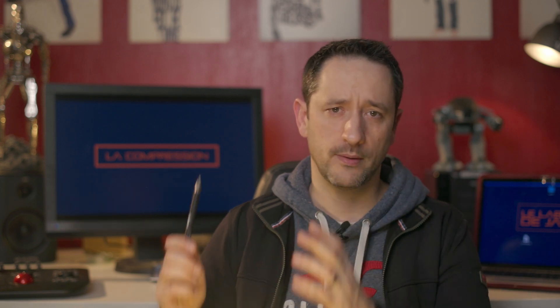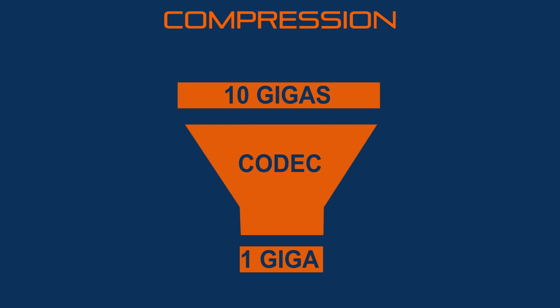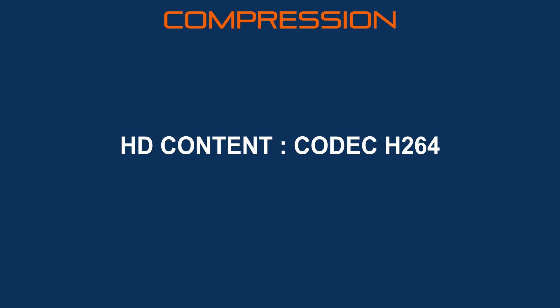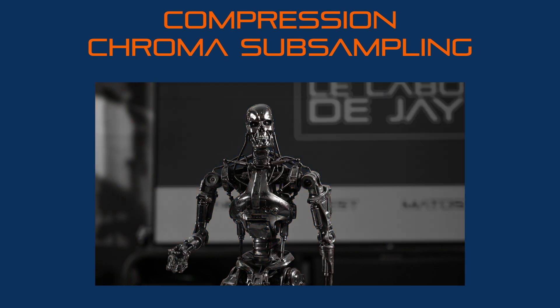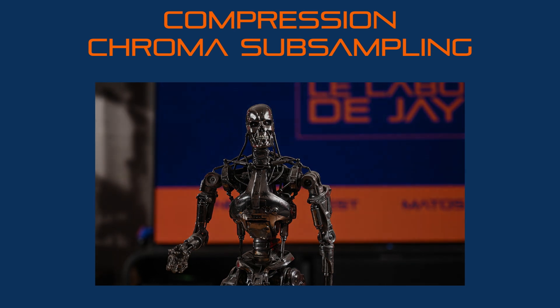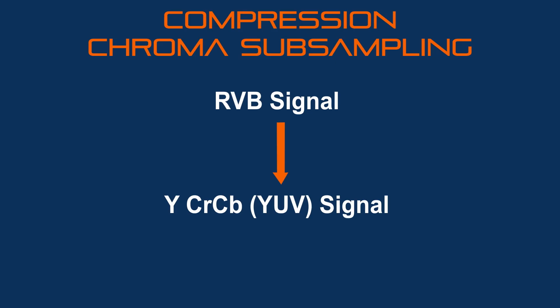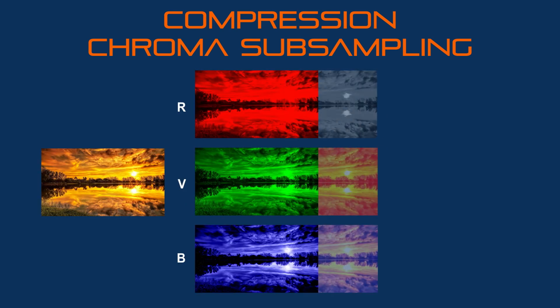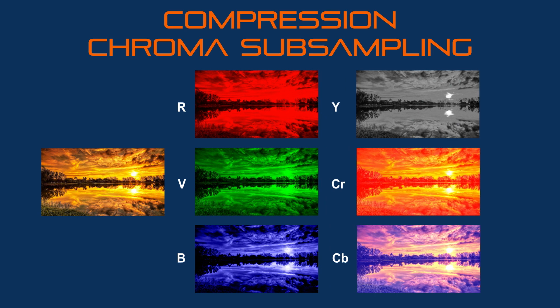The last concept we are going to talk about is compression. For compression we use what we call a codec — compression and decompression. For HD content the codec used is H.264. For 4K HDR content the codec is HEVC H.265. To reduce the size of a file we focus on color, because the human eye is less sensitive to color than to light. A simple example: take a picture, remove the color and you still have a black-and-white picture; remove the light and you only have black. To reduce file size we decrease color information by converting the RGB signal into a YCrCb signal, separating luminance from chrominance: Y is luminance, Cr is red color information, and Cb is blue color information. We can reproduce green from YCrCb. This process is called chroma subsampling.